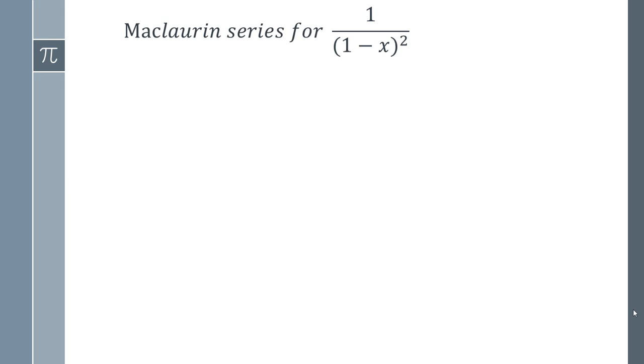We're going to start by making a slightly odd realization, but it's going to make things a lot easier. The derivative of 1 over 1 minus x equals the function that we want to find the Maclaurin series for.